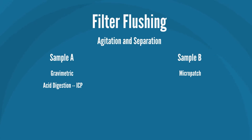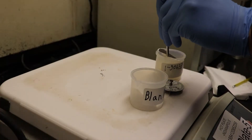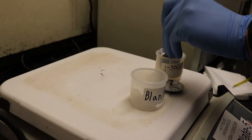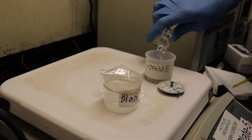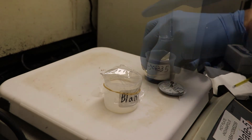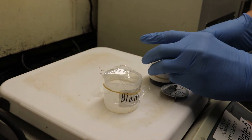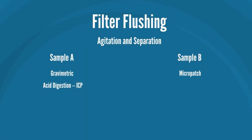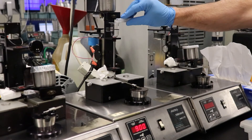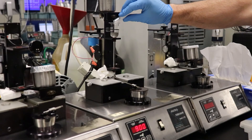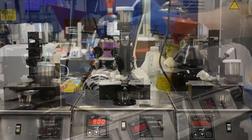The collected debris from sample A is digested with nitric acid, preparing it for ICP spectroscopic analysis. Meanwhile, sample B is prepared to create an analytical ferrogram slide, which is sent to the data analyst.